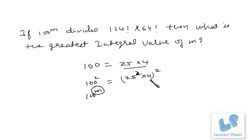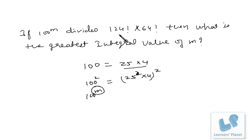Now obviously if we expand this number, 25 will be less than 4, but we are interested in combinations. To save time, what we can do is just find out the number of 25s contained in 124 factorial and 64 factorial, because extra 4s are not required at all. The number of 25s will equal the number of combinations of 25 and 4 that we are interested in. So I'll be finding out 25s in 124 factorial and 64 factorial.